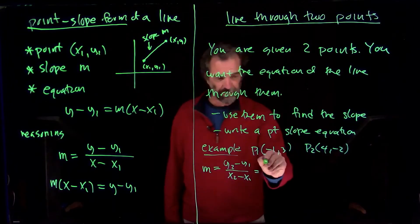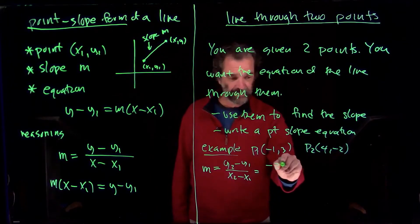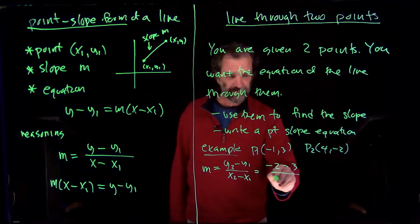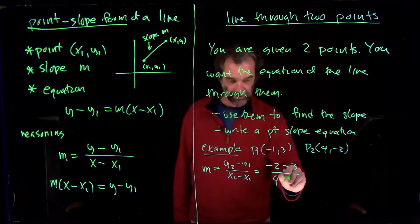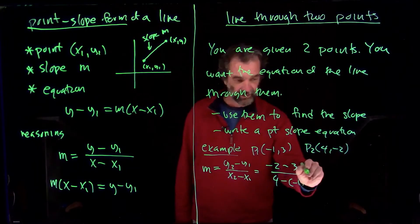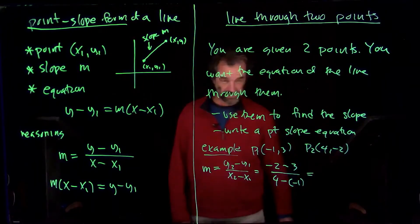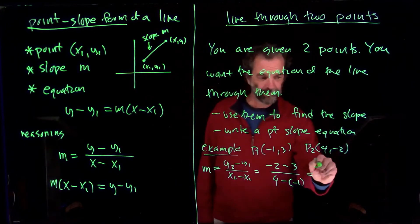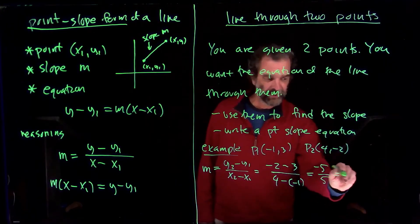Y₂ is -2, y₁ is 3, x₂ is 4, x₁ is -1. So we get -5 over 5. That's -1.